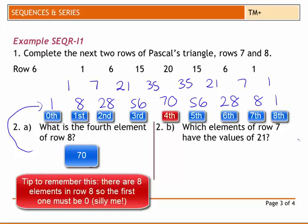Which elements of row 7 have values of 21? Well, row 7 is here. 21 is here. So it's 0, 1, 2, 3, 4, 5. So the 2nd and 5th.